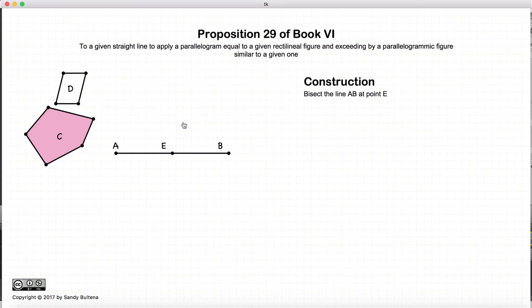To do this, the first thing we do is divide AB in the middle at the point E. We then draw a parallelogram that is similar to D on the line segment EB.